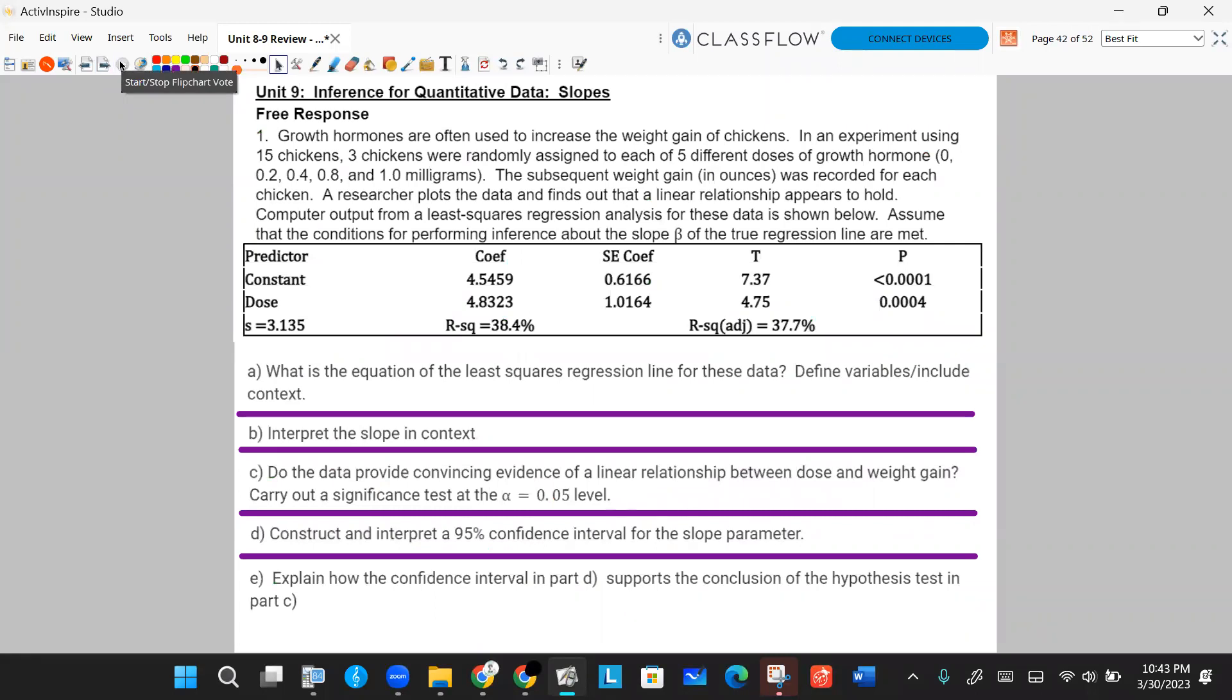Here's the whole question. It's going to be broken up into five parts. We'll do one at a time. Growth hormones are often used to increase the weight gain of chickens. In an experiment using 15 chickens, three chickens were randomly assigned to each of the five different doses of growth hormone. We have zero, 0.2, 0.4, 0.8, and 1.0 milligrams.